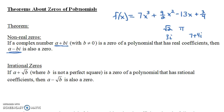The conjugate of a+bi is a−bi. We have a similar theorem about irrational zeros. If a plus the square root of b — where b is not a perfect square (so not something like 9 or 16, where the square root isn't really irrational) — is a zero of a polynomial with rational coefficients, then a minus the square root of b would also be a zero. The conjugate of a+√b is a−√b, so again, these zeros come in conjugate pairs.